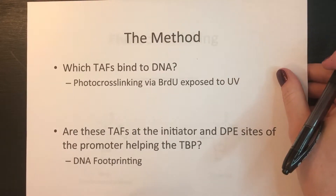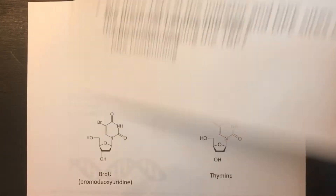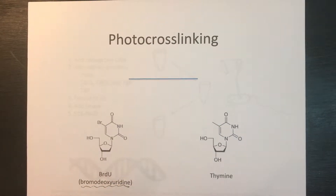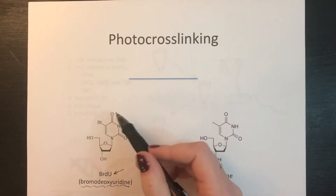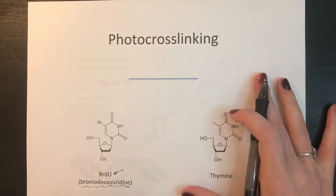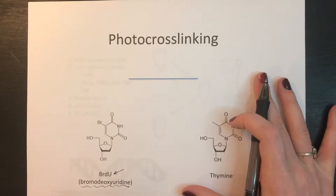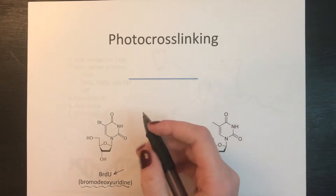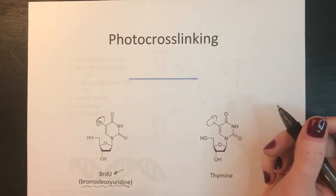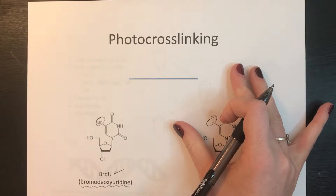First, let's focus on photo-crosslinking using BRDU. BRDU is an abbreviation for bromodeoxyuridine. This molecule is very similar in structure to thymine found in DNA. The difference between these bases is that the bromine group on BRDU replaces the methyl group on thymine. So this bromine group is the part doing the photo-crosslinking to the protein when exposed to UV light.